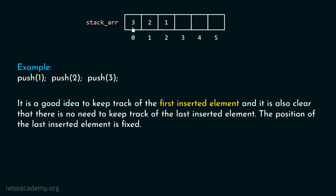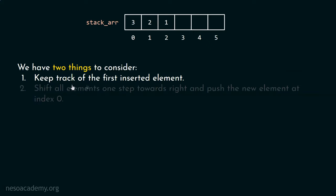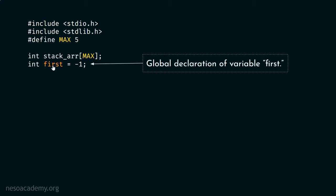We always have to keep track of the element whose position is changing with time. Here the position of the first inserted element changes with time — that is why we track it. The position of the last inserted element is fixed, so there is no need to track it. We must also shift all elements one step towards right and push the new element at index zero. To track the first inserted element, we declare a global variable called first, initially set to minus one to indicate the stack is empty.